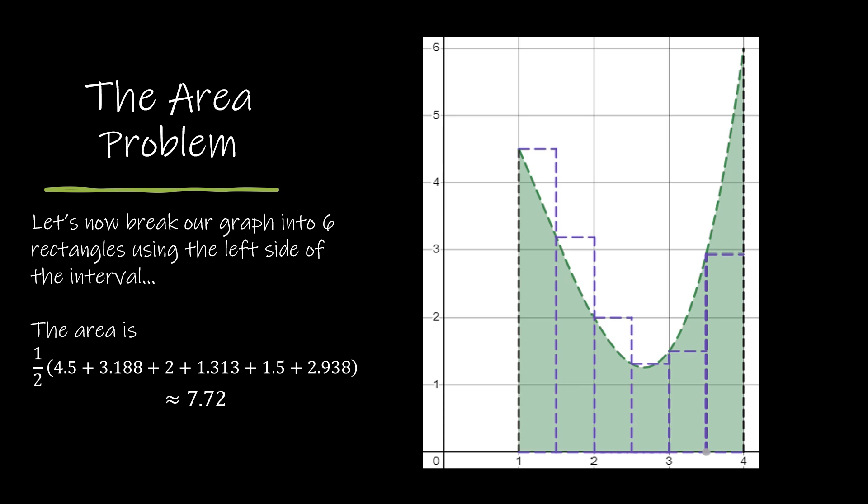It makes sense then, if I continued to make smaller rectangles, that there would be less area that I'm under or overestimating. In this question, I have overestimated some, but not as much as before, and I have underestimated some. I just found the left-hand side, and I've multiplied everything by one half because that was the width of each rectangle. So it's one half times 4.5 plus one half times 3.188 and so forth. And so that estimation is 7.72.